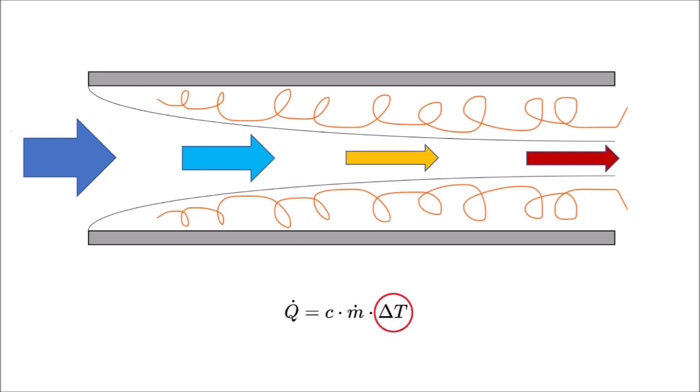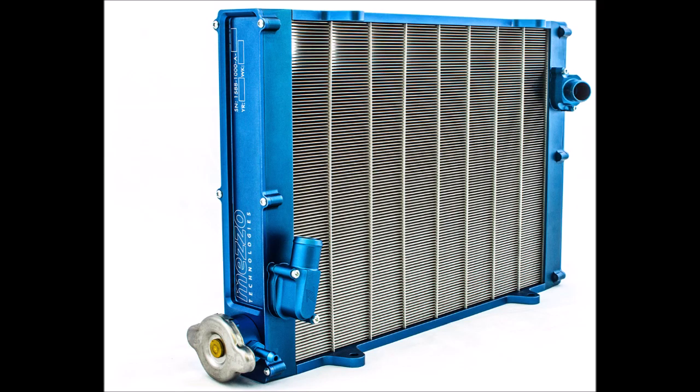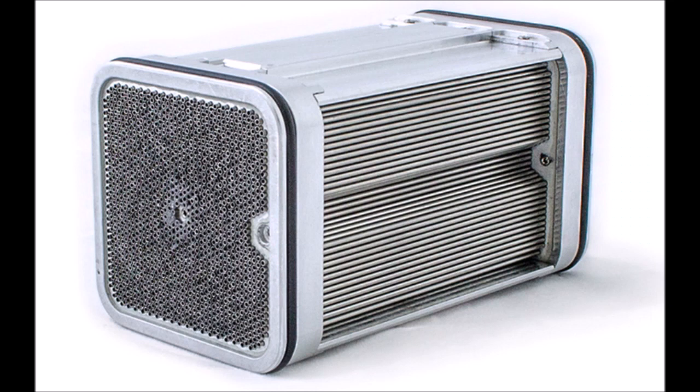This is the general characteristic of standard radiators and now let's have a look at microtube radiators. As the name states, they consist of thousands of tubes with a very small diameter of less than 2 mm.